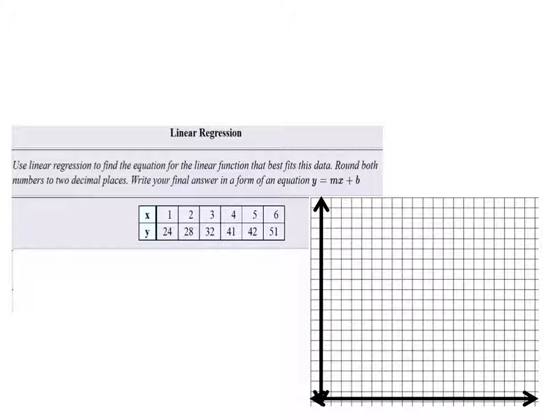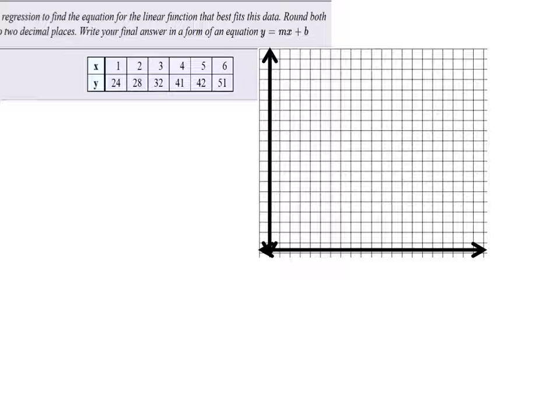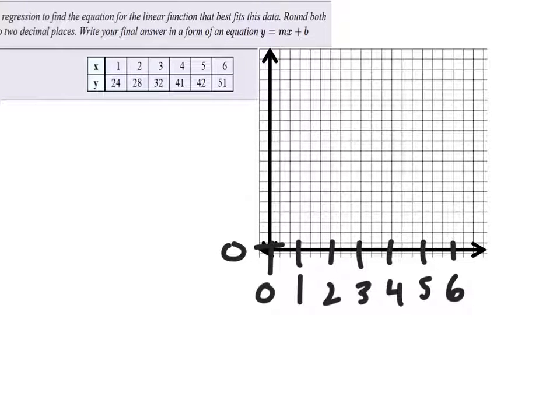It doesn't tell us what the X or Y represents, and that's okay. It's not like we really need that information, but we will have to give ourselves a scale on the X and Y axis. So let's go ahead and do that. What about the Y scale? Our biggest number is 51, so it's got to go at least that high. So I'm just going to use the scale going up every three lines.